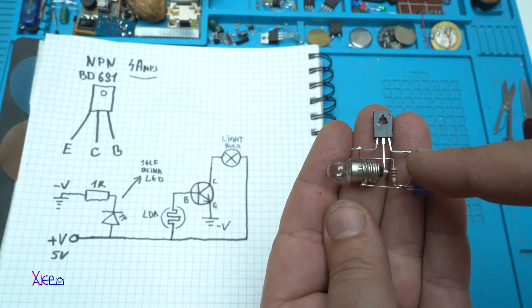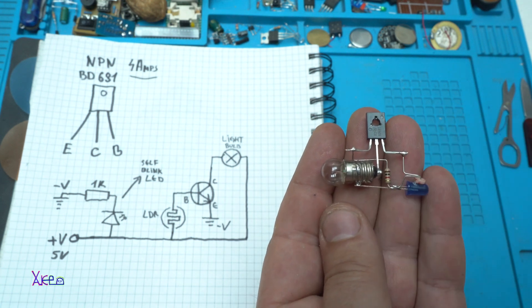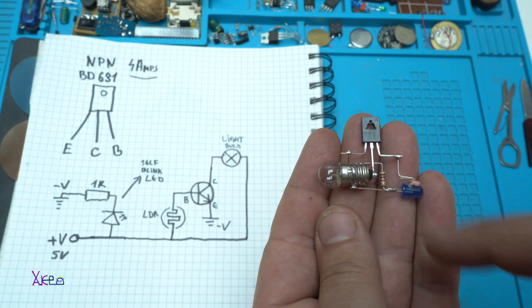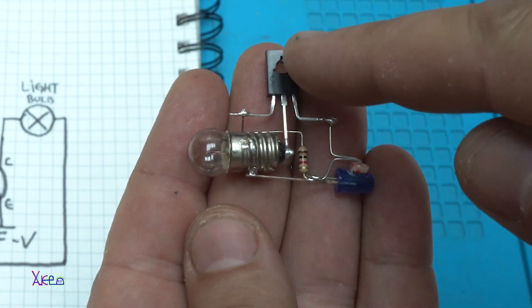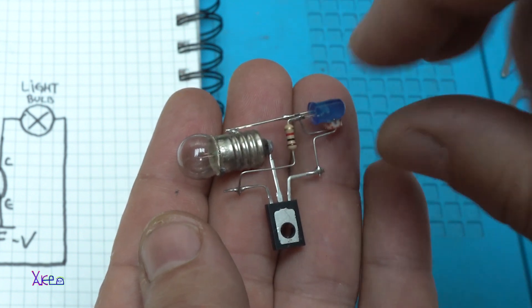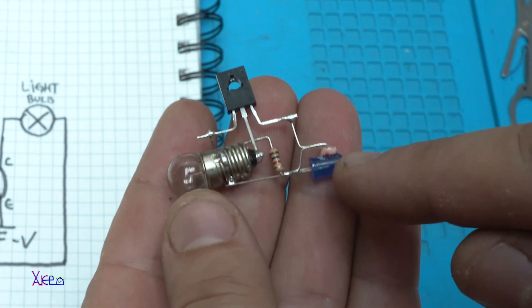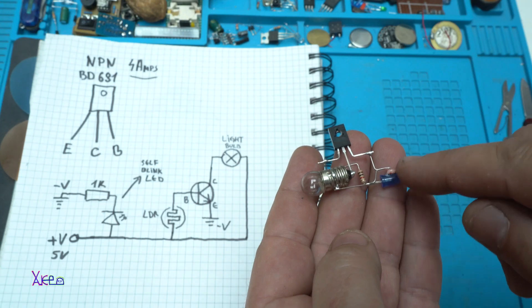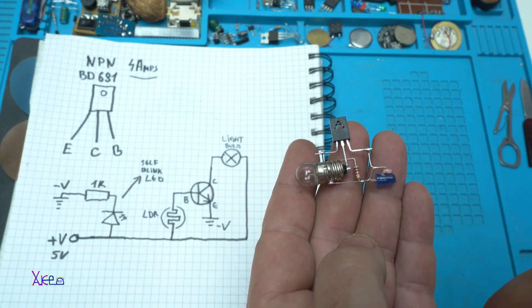And here is the whole circuit soldered in free form - the light bulb, the transistor. Here is the resistor for the LED and on the LED with super glue is attached the photo resistor.